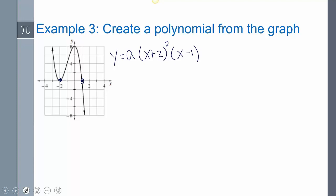And so now I need to pick a point. It looks like I can use this one. That's a nice even one where my X is zero and my Y is eight. So then eight equals A times zero plus two squared times zero minus one. Eight equals A times four times negative one. Eight equals A times negative four. Divide both sides by negative four. A equals negative two.